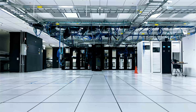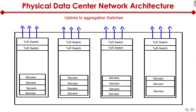Within a data center, we have rows and rows of racks. And within each rack, as represented in the picture here, we have servers underneath, typically at the bottom of the rack. And then what we have at the top of the rack is called a ToR switch, or top of rack switch. That's what ToR stands for.